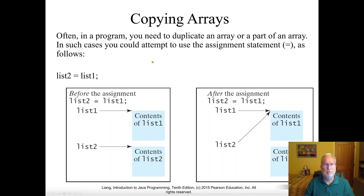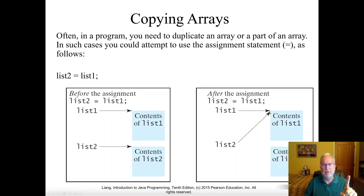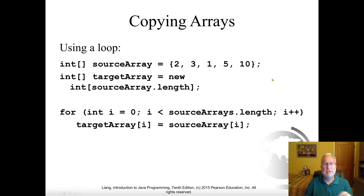Copying arrays — you've got to be careful. If you do list2 = list1, you might think list1's values just get copied into list2, but that's not what happens. Before the assignment you have list1 and list2 pointing to their own contents. After the assignment, list2 is gone — it now points to the same contents as list1. So you have one array with two variables pointing to it. If you change list1, it changes the contents; if you change list2, it also changes the same contents. You have to be careful because it may not be doing what you want. To truly copy an array, use a for loop and copy element by element from a source array to a target array.